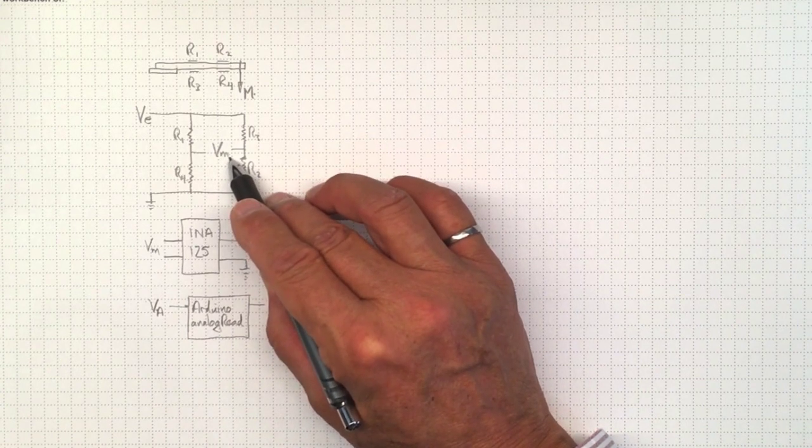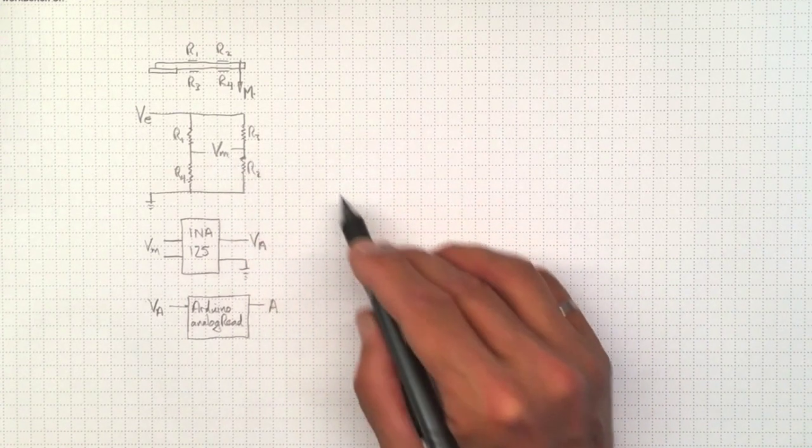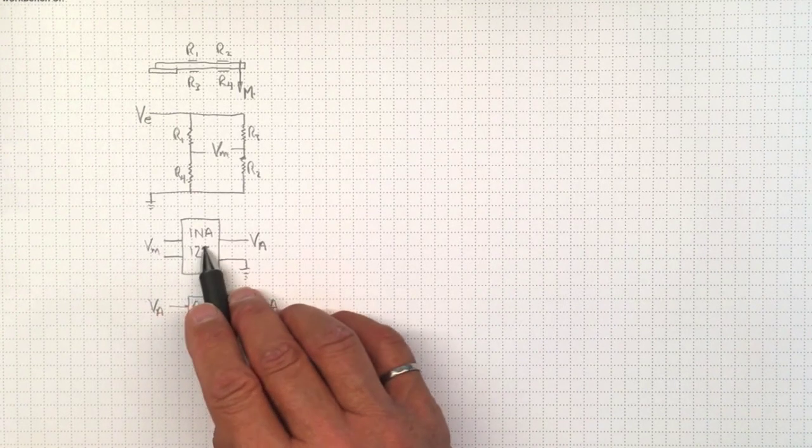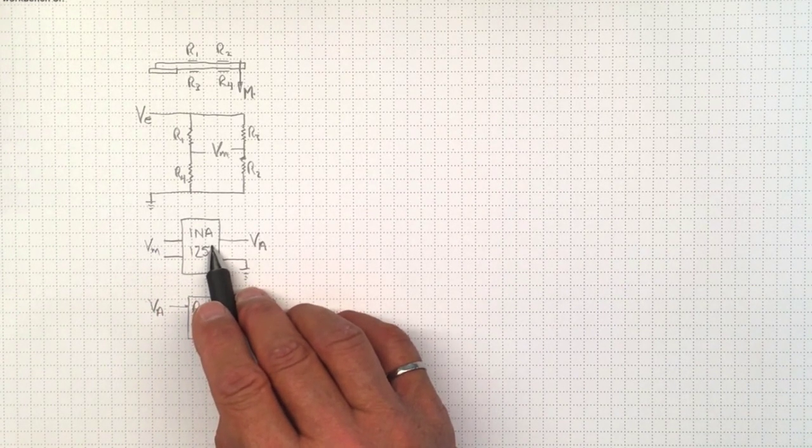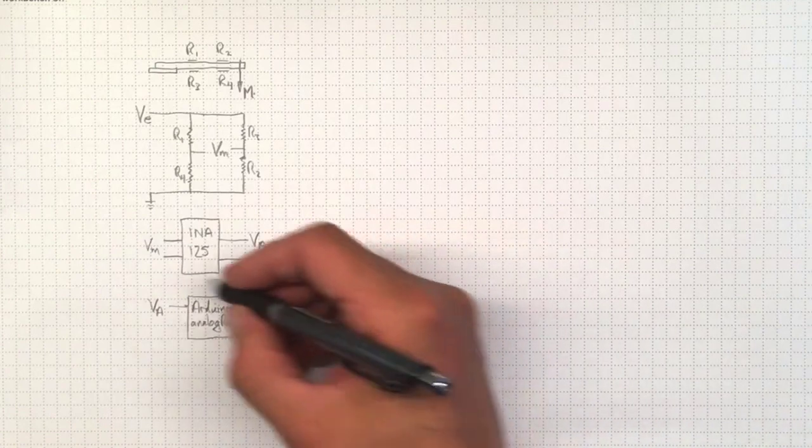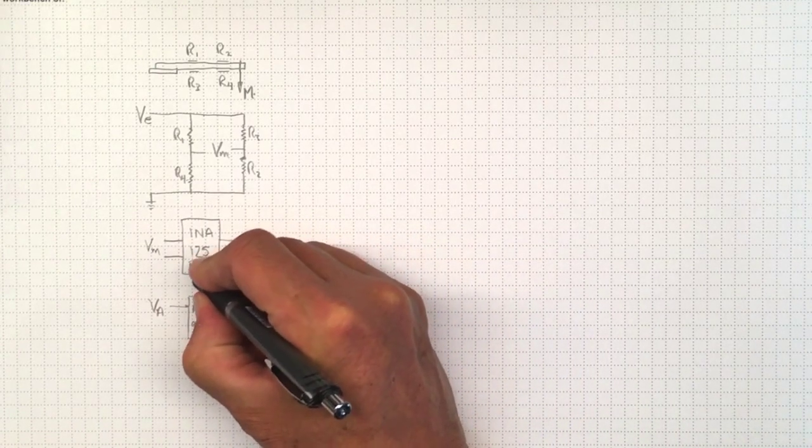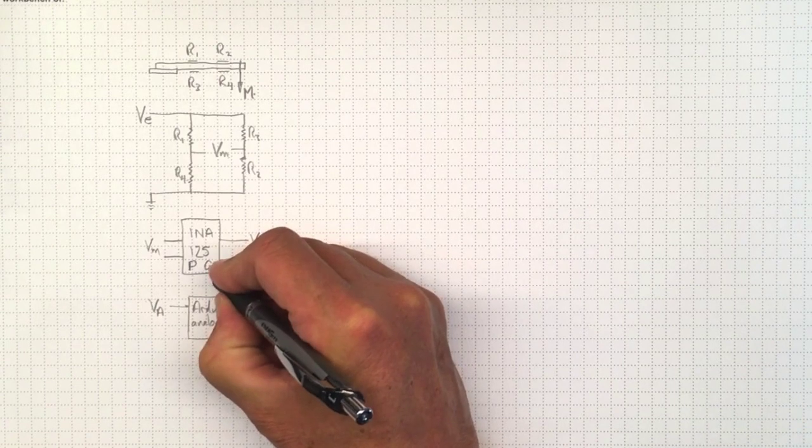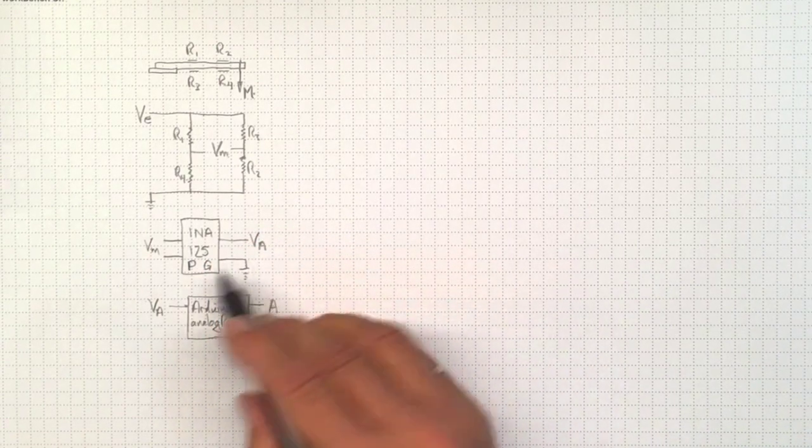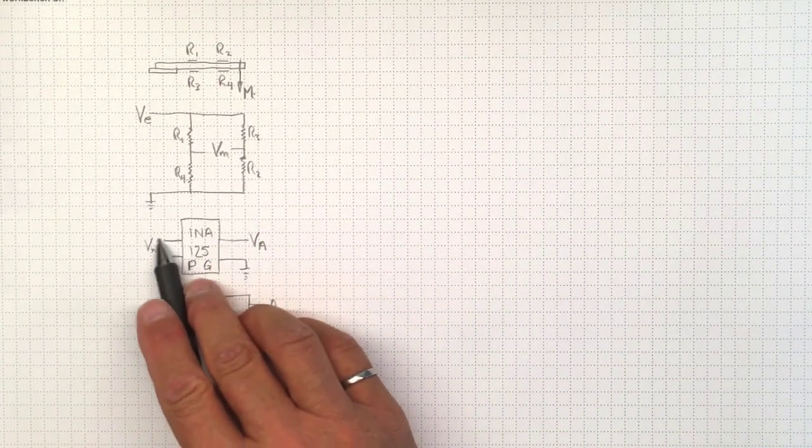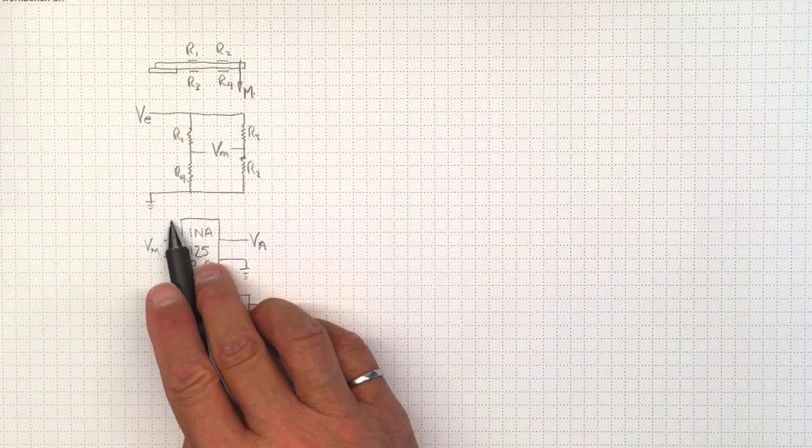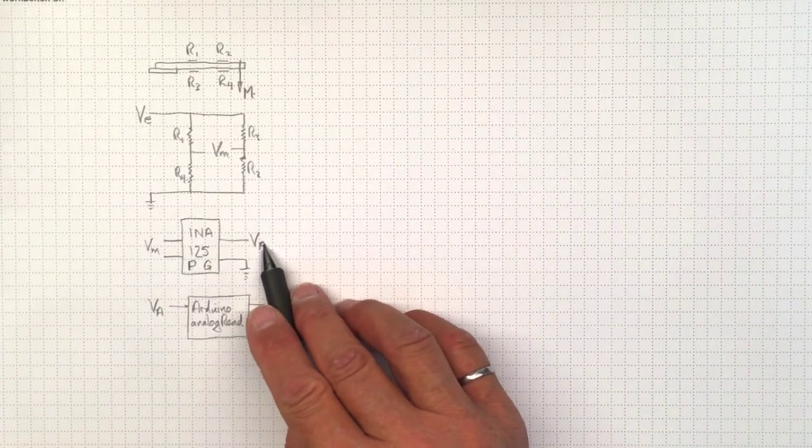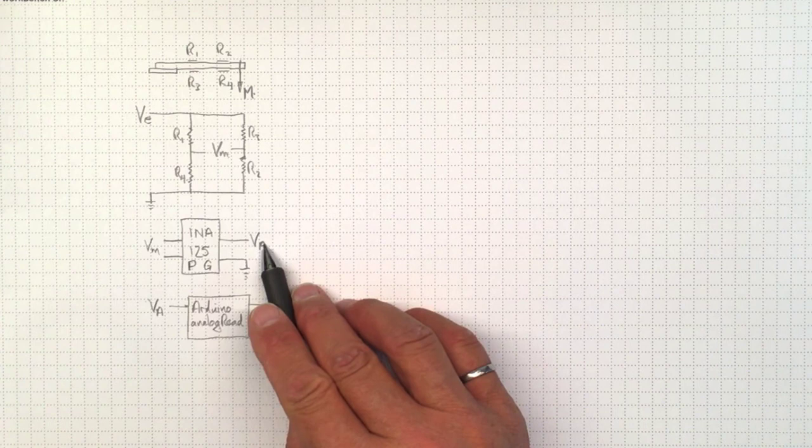But that measured voltage is going to be really small. So we're going to take it out and we're going to run it into an INA125 instrumentation amplifier. And it's going to have an offset, some pseudo ground value, and some gain that we'll set with a resistance. And that will increase the magnitude of this voltage and offset it to produce an output voltage that's in the readable range, sort of 0 to 5 volts range that we can read with our Arduino.